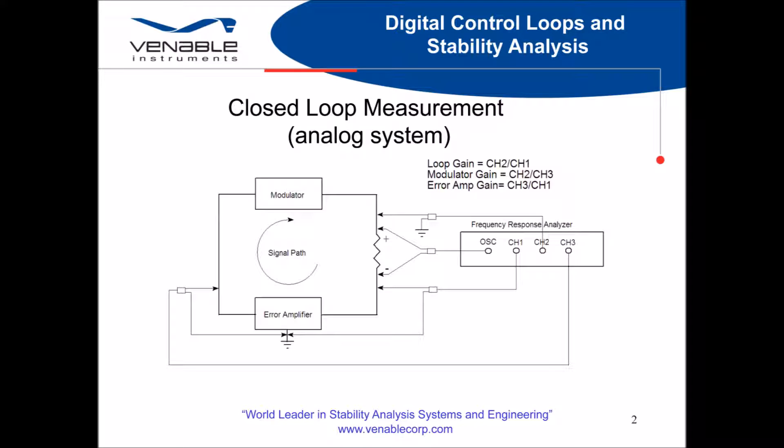In order to understand how we do loop analysis in the digital world, we first quickly look at how closed-loop analysis is done in a purely analog system. We do a closed-loop analysis using a three-channel analyzer. The injection is performed across a low-impedance injection resistor inserted into our loop in series. Channels 1 and 2 are attached on either side of the injection resistor to measure our total closed-loop transfer function. Channel 3 is attached to the point between the error amplifier and the modulator. By doing this, the measurements of channel 1 and 3 give us the transfer function of the error amplifier, and the measurements for channel 2 and 3 give us the transfer function of the modulator.